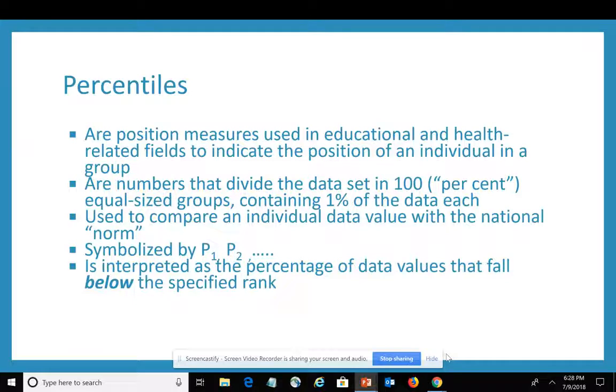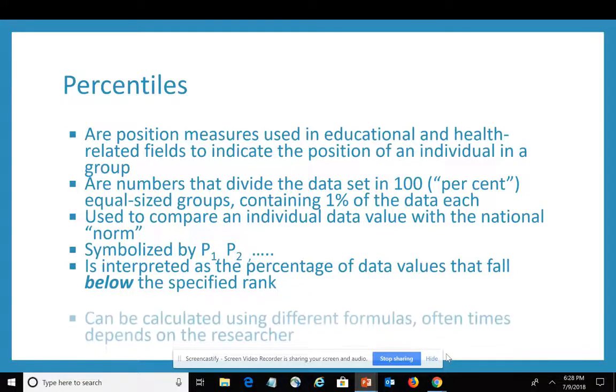The main thing to focus on is how to interpret a percentile. A percentile is interpreted as the percentage of data values that fall below the specified rank. Going back to our ACT math example, if your score of 25 is in the 90th percentile, that means 90% of all the people who took the test scored below 25, which is really good.